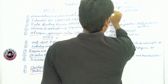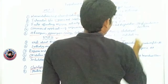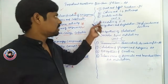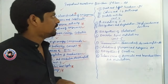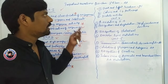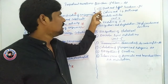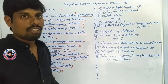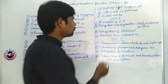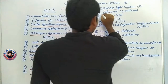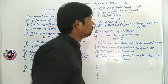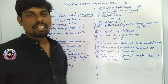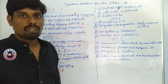Coming to the third question. The third question is the dark light reaction of photosynthesis. Photosynthesis — the dark light reaction — this question is important. Next: Calvin cycle, C4 pathway, C4 cycle — that is a very important question.